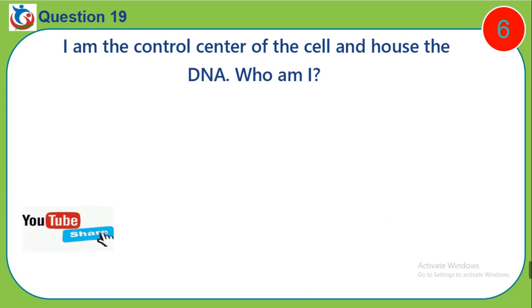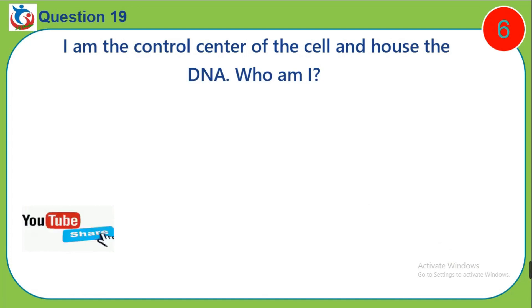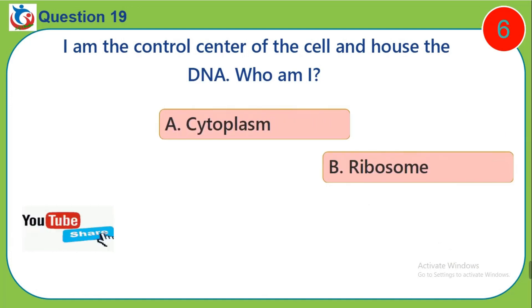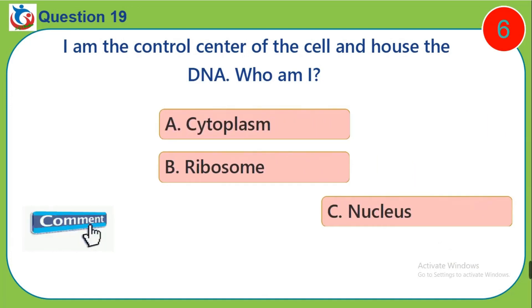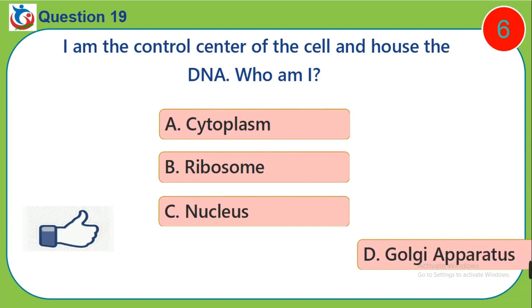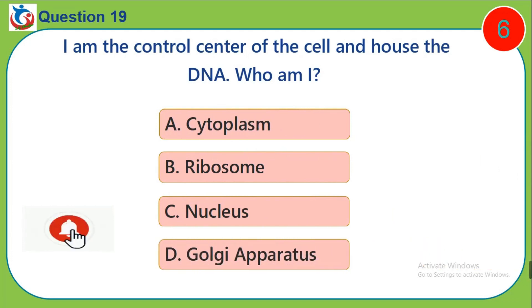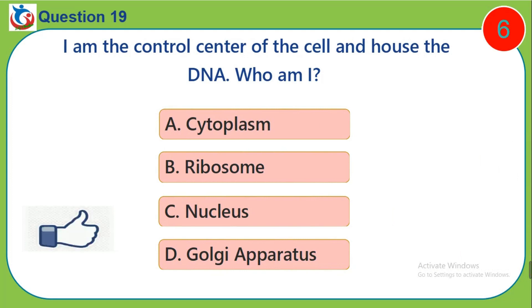Question 19. I am the control center of the cell and house the DNA. Who am I? A. Cytoplasm. B. Ribosome. C. Nucleus. D. Golgi apparatus.